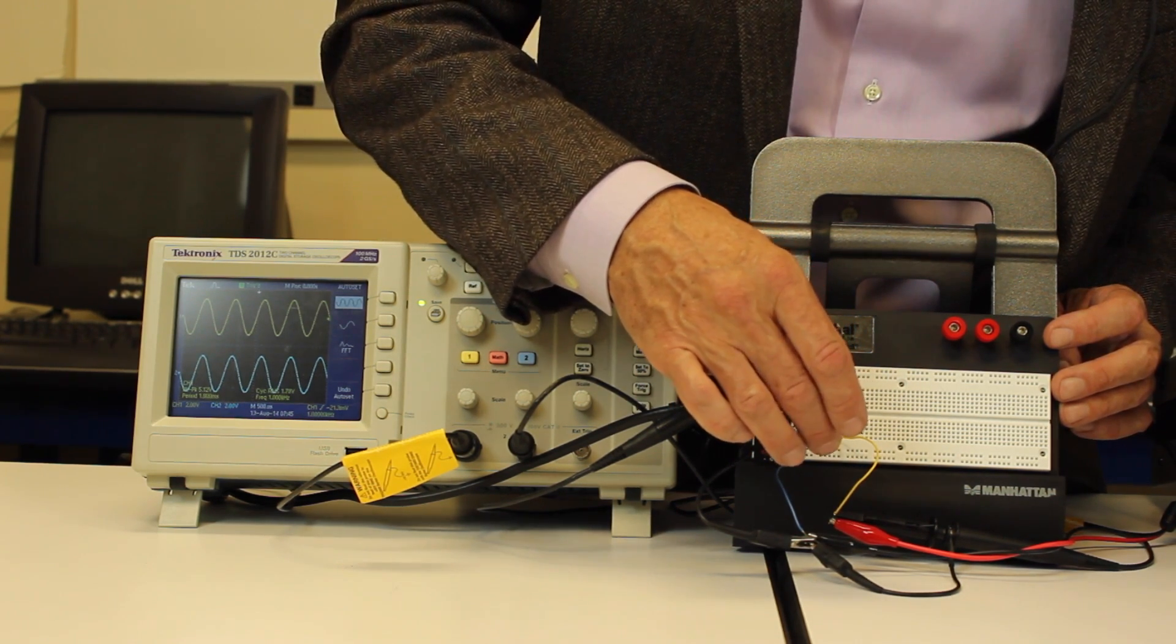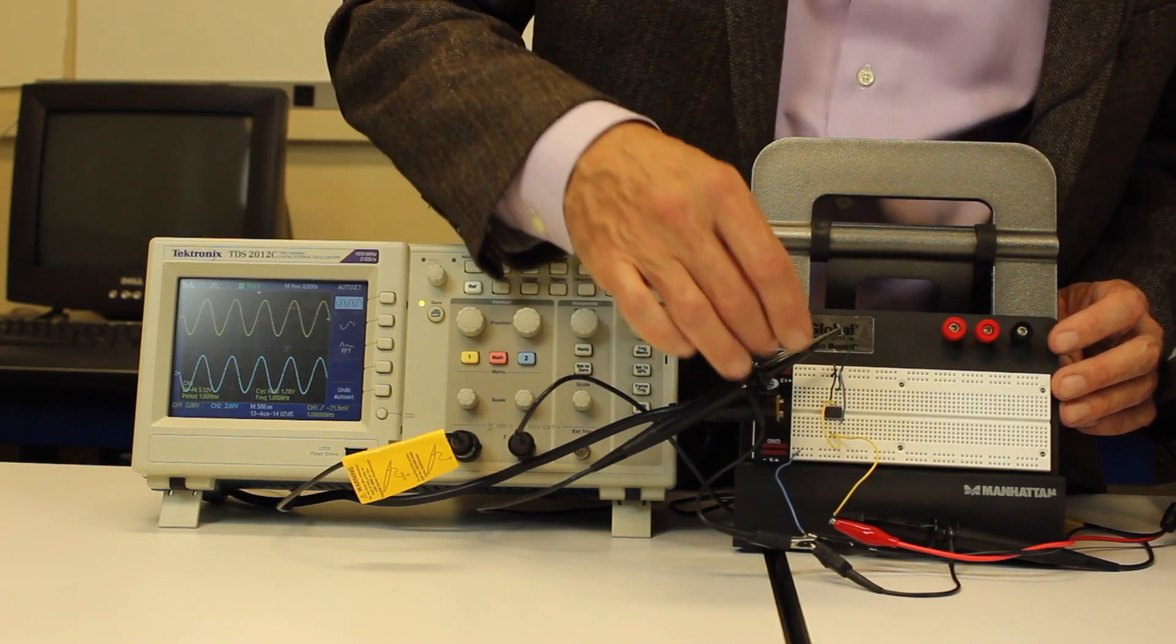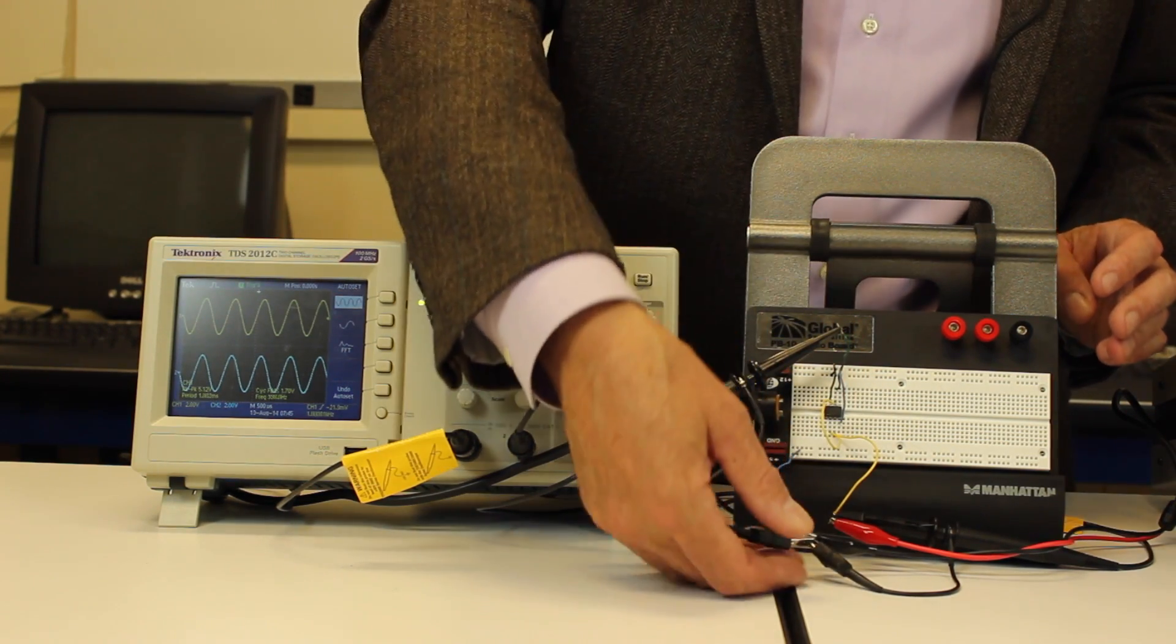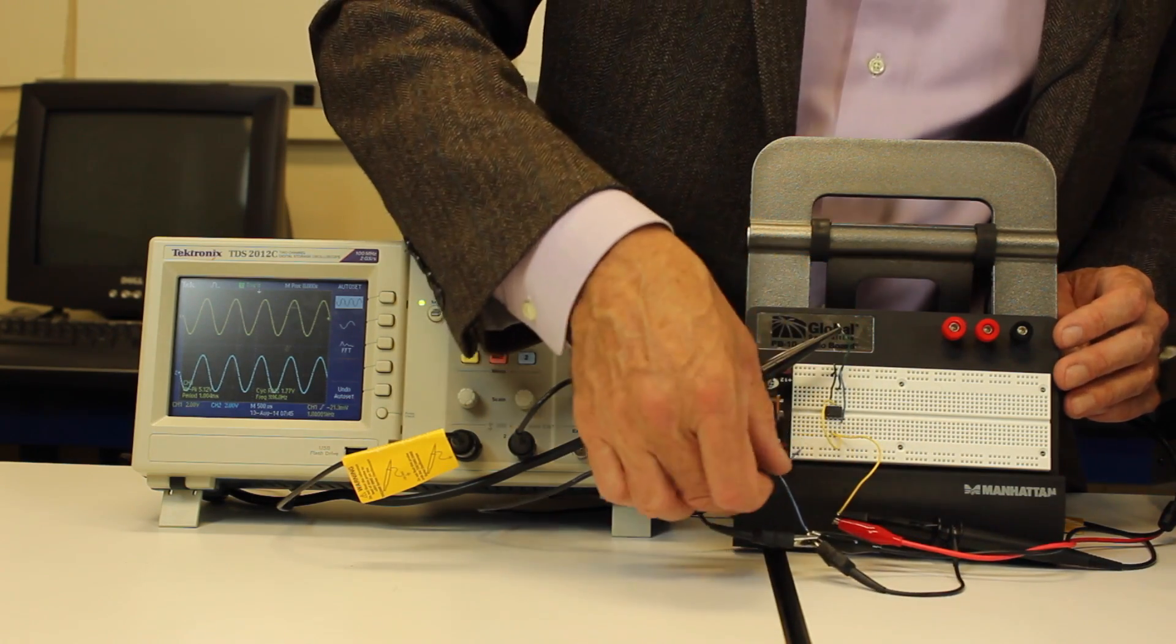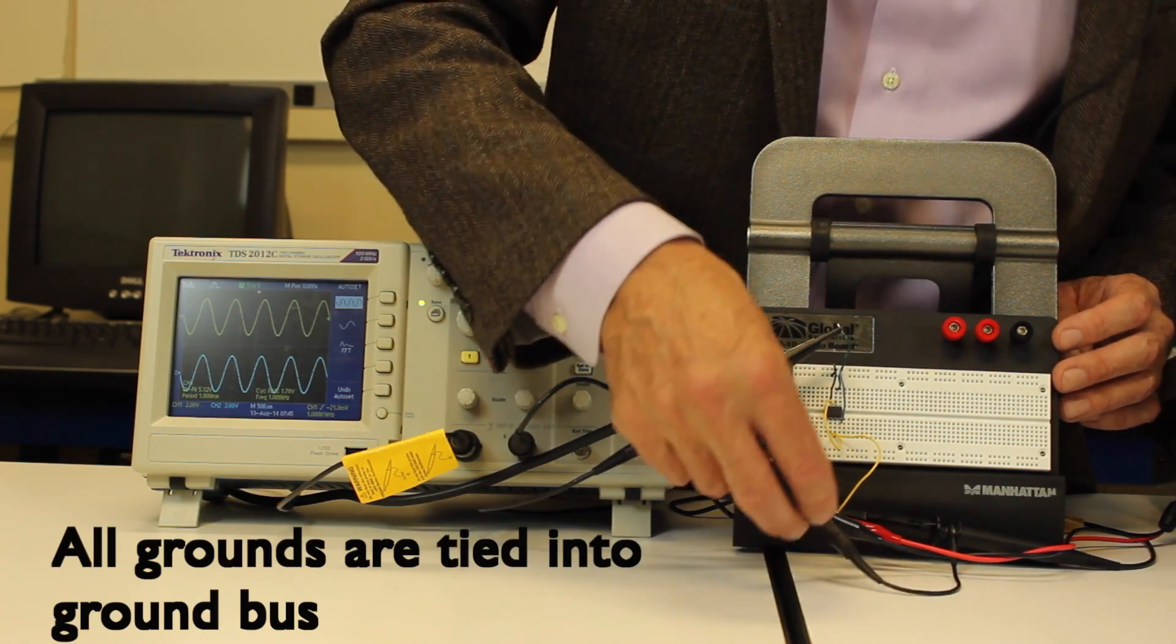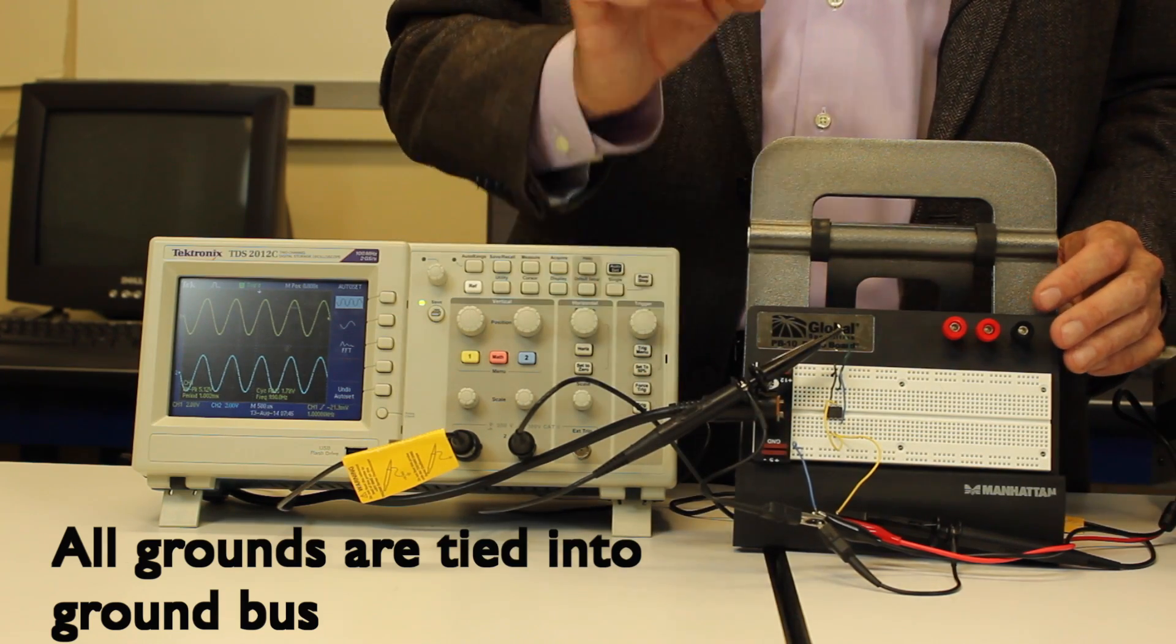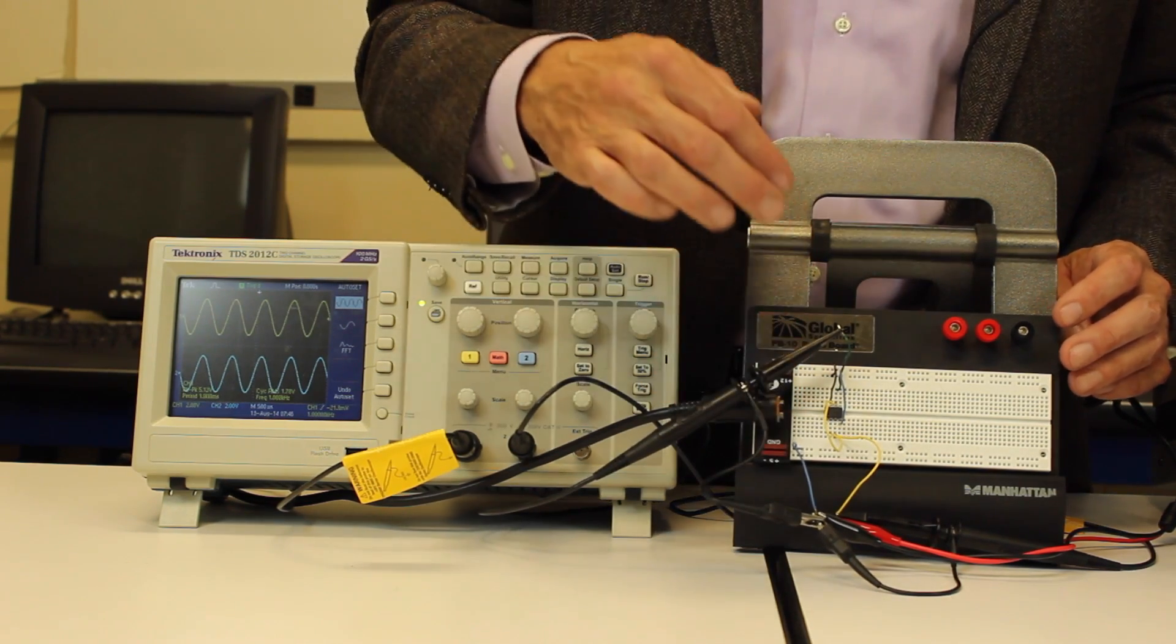So we take the output into the inverting input. Something else that's important here, all these ground connections here, even though there's no ground on the op-amp, they're tied into the ground bus of this circuit here. That's very crucial, all the grounds have to be tied together on a ground here.